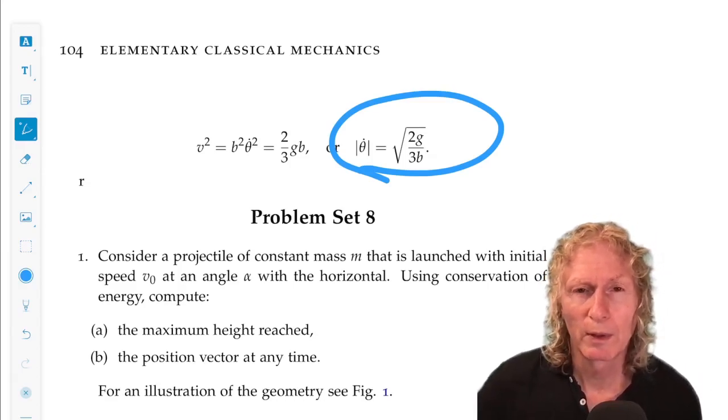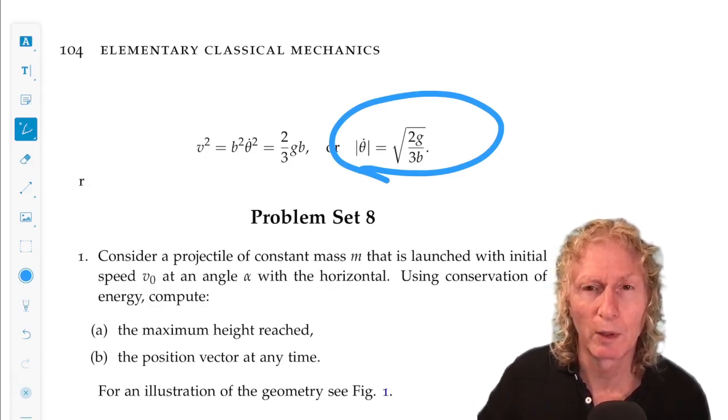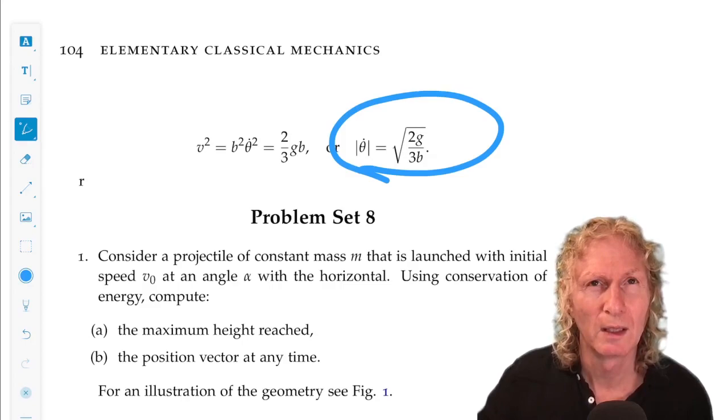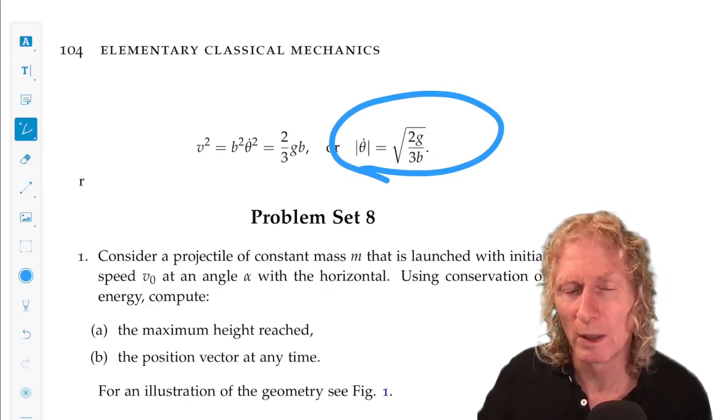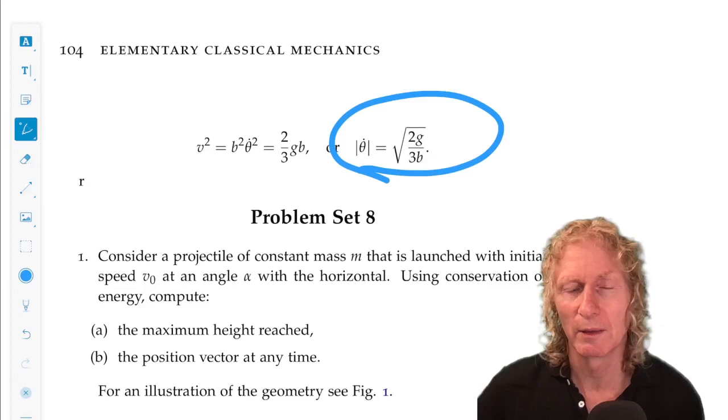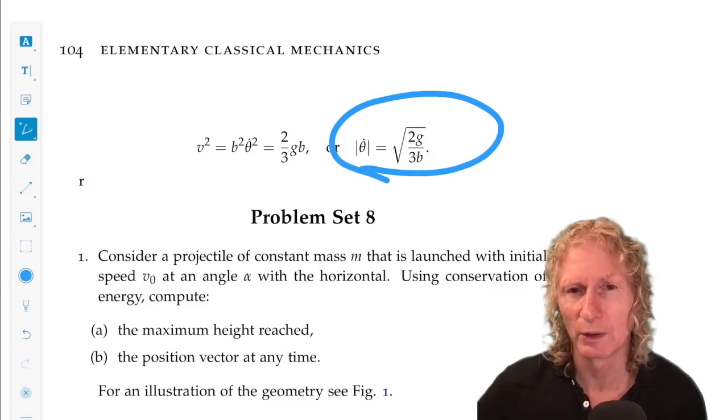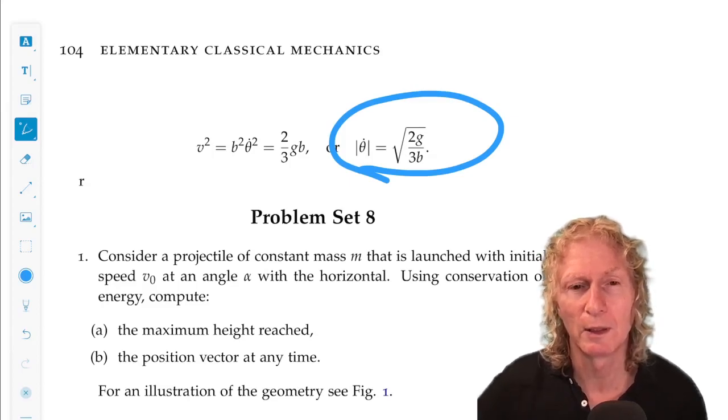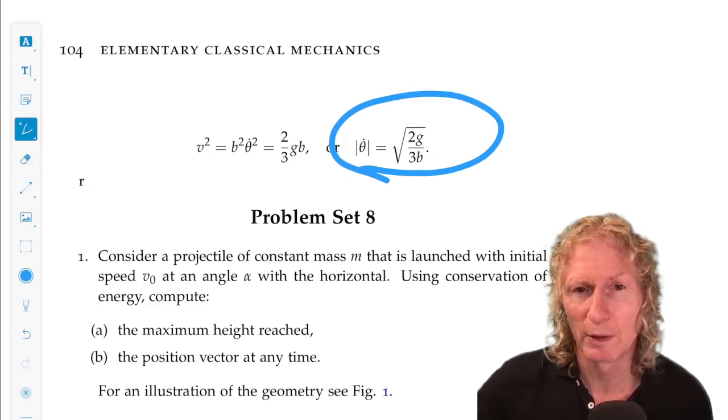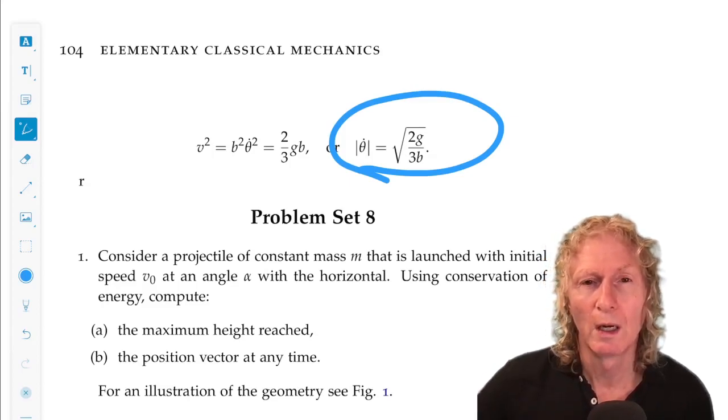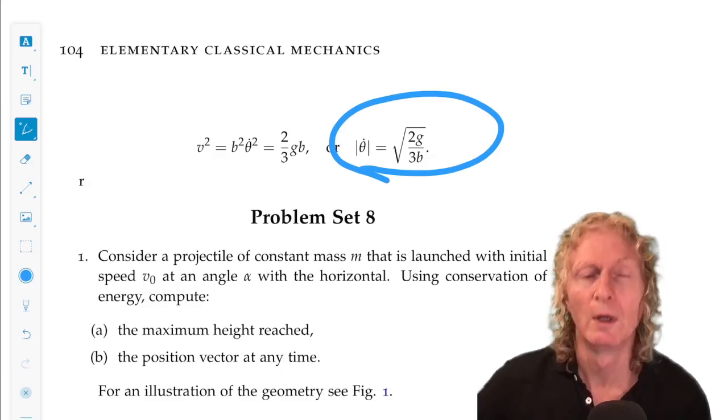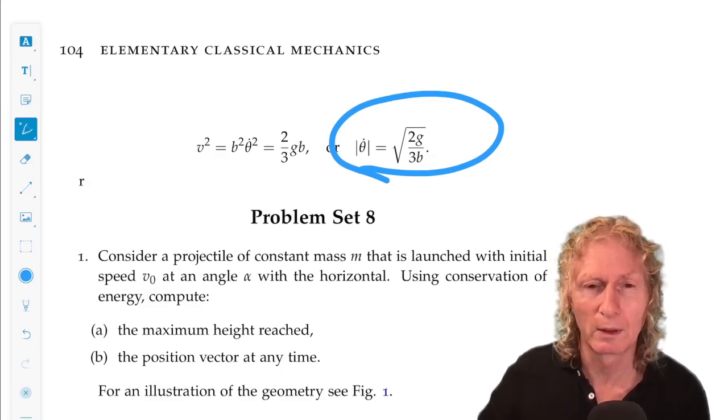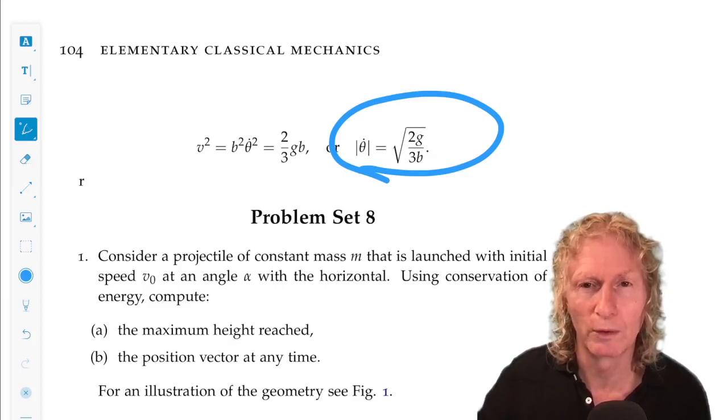If you compare with the earlier way in which we solve this problem, this was a bit easier because we had to integrate one component of Newton's equations to get this relation. Here, we get it completely from energy. But we still need to use Newton's equations to get the condition for leaving the sphere, which is a normal force equaling zero. So, the condition on forces involves Newton's equations.